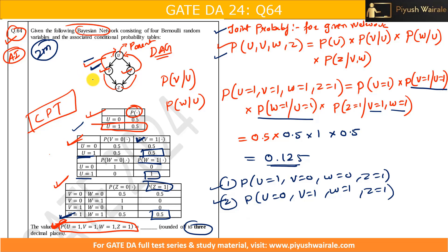What if they change the diagram itself? That is another type of question you can expect. They can use the same diagram with the same CPT, or they can change the values in the tables. They can also ask any arrangement of variable values. They can also ask different questions by just changing the diagram structure.